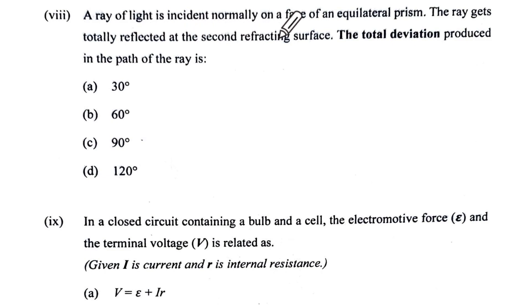The ray of light is incident normally on the face of the lateral prism. The ray is totally reflected at the second refracting prism, so the total deviation produced by the path. The ray of light is incident normally so it will go undeviated like this.